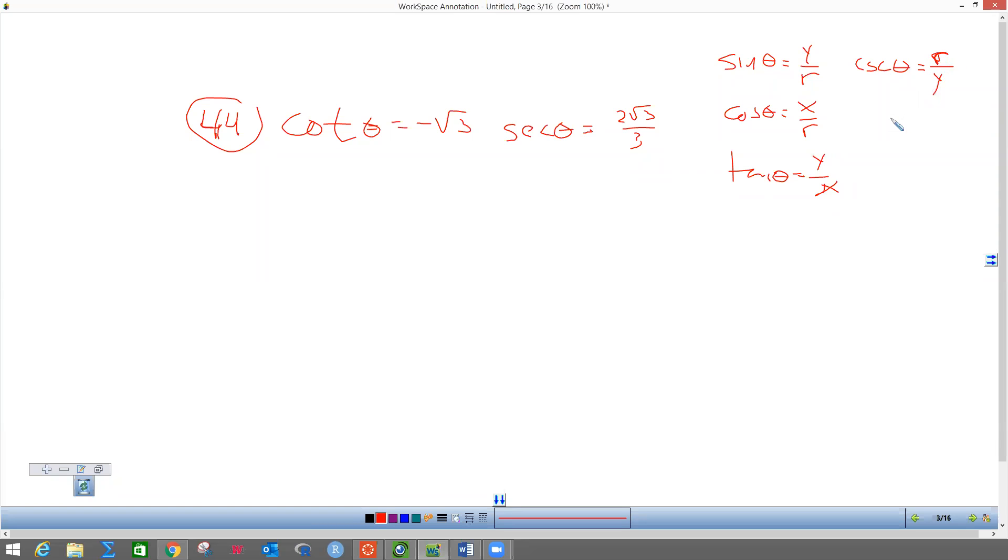This is an R up here, and then this is going to be cotangent. You're supposed to know this stuff. Secant, if you look at secant, is dealing with X.